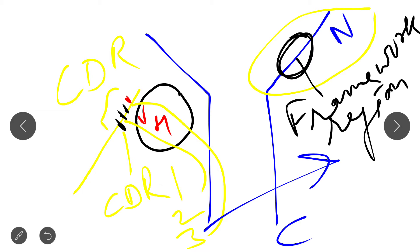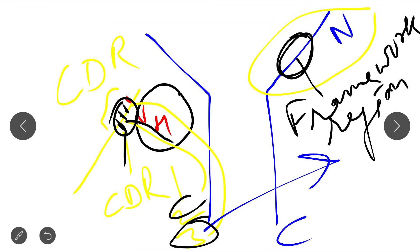Now you have a clear idea about the variable region, the constant region, and the three small restricted parts present in both light chain and heavy chain — CDR1, CDR2, and CDR3. CDR3 is the most variable, while the remaining part of both the variable region of the heavy chain and light chain is known as the framework region, which is the constant part of the variable region.